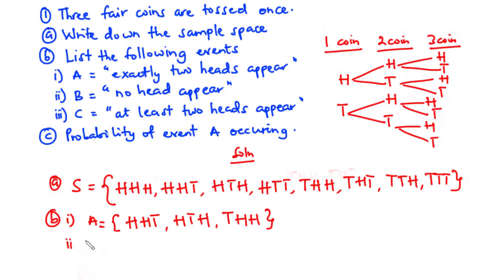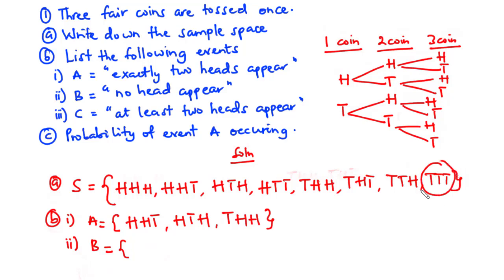For part B(ii), set B — no head appears. The only outcome with no heads is TTT. So set B = {TTT}.